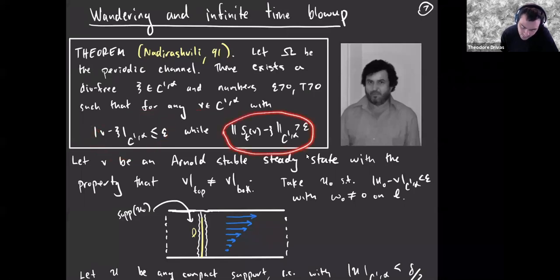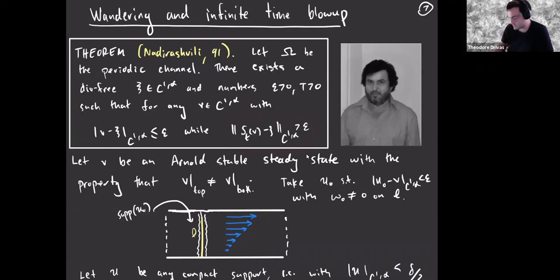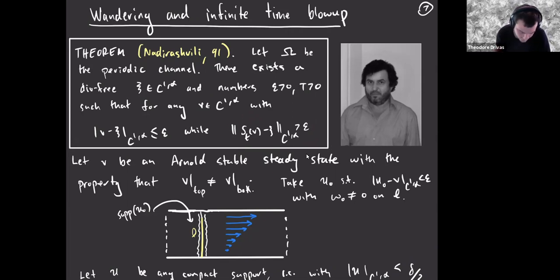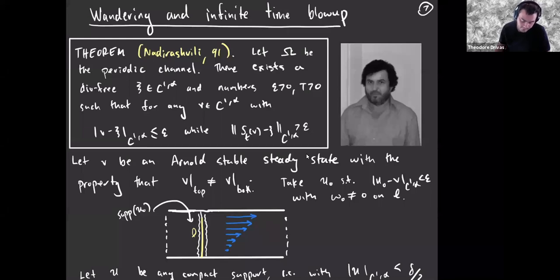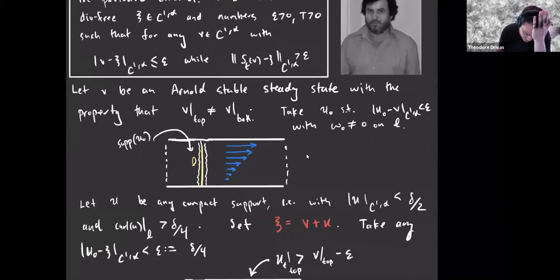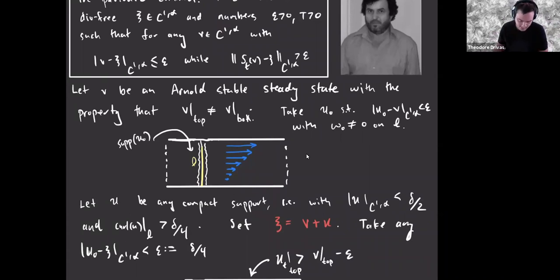His statement: there exists some divergence-free field ξ, a small number ε, and large T, such that for any velocity in a neighborhood of ξ, you leave that neighborhood after some time for all later times — you never re-enter. So it's a non-ergodicity result for the dynamics in C^{1,α}. His proof actually shows that the C^{1,α} norm of the solution starting nearby ξ grows indefinitely in time, in fact like t^α. His ξ is a perturbation of Couette flow — constant vorticity Couette flow perturbed with a very thin strip of vorticity connecting the top and bottom of the channel.